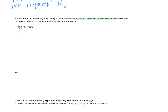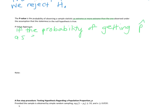The phrase 'as extreme or more extreme' is used to accommodate all of your tests. In a right-tailed test it means greater than or equal to; in a left-tailed test it would be less than or equal to. The probability of getting P-hat as extreme or more extreme — that's your p-value.